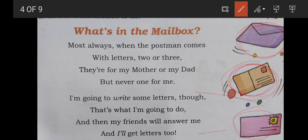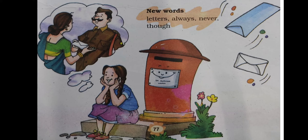Next page — here are some of the new words. Letters — L-E-T-T-E-R-S — letters, meaning chithiyan. Always — A-L-W-A-Y-S — always means always. Never — N-E-V-E-R — never means never. Though — T-H-O-U-G-H.